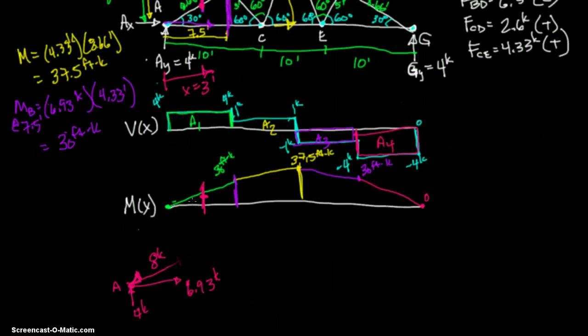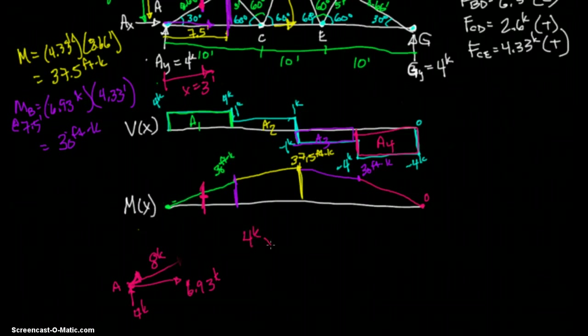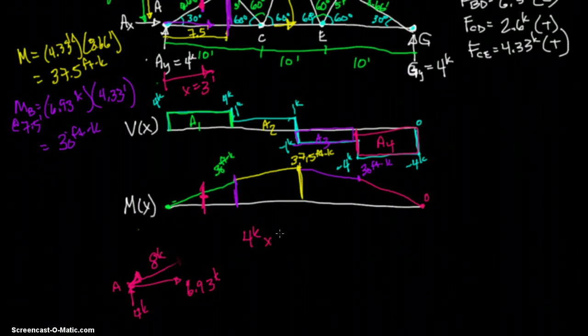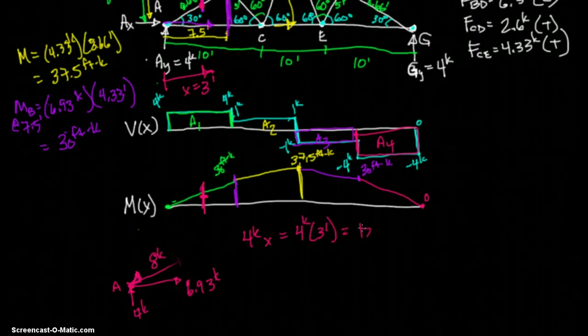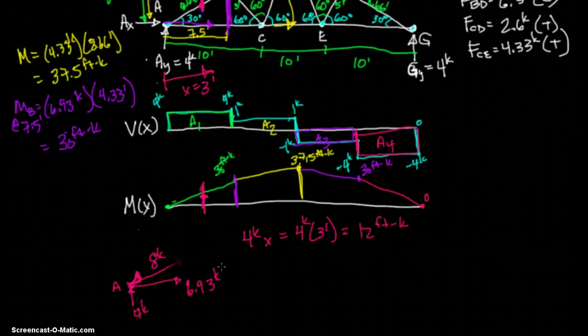So we had the slope is 4. Let's figure out what the moment at M(x) equals 3 is. So let's figure this out. We have 4 times x, 4 kips times x, and that should be it. So our x is 3, so 4 times 3 foot, it should be 12 foot kips. That's what our answer should be - let's see if we get this to be 12.